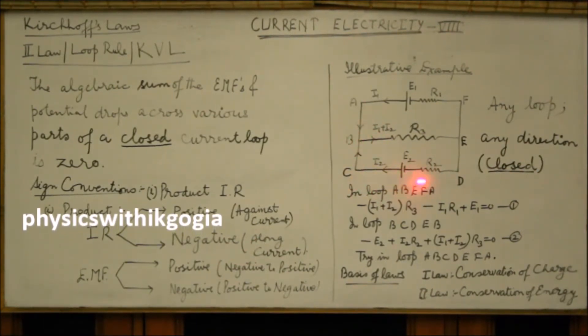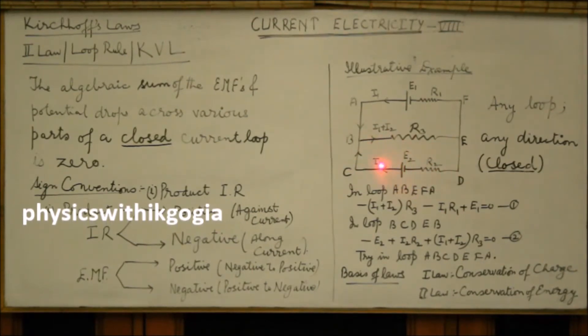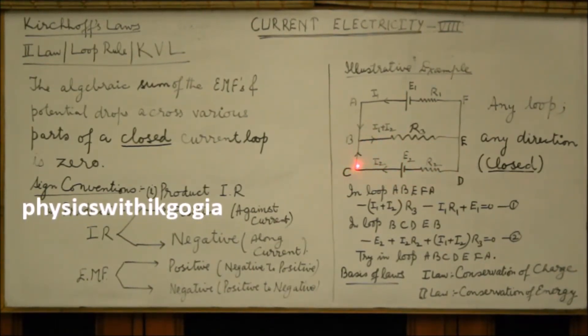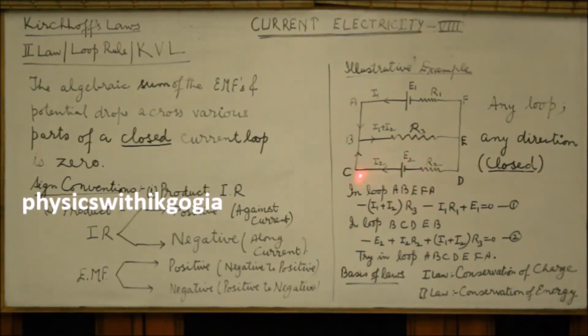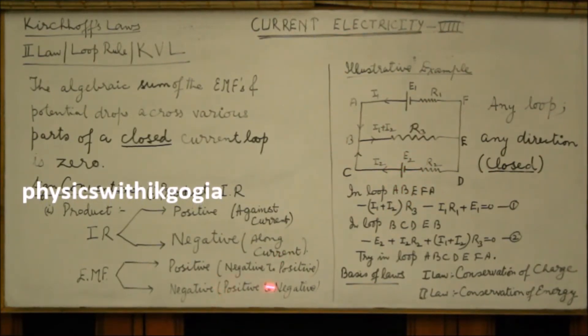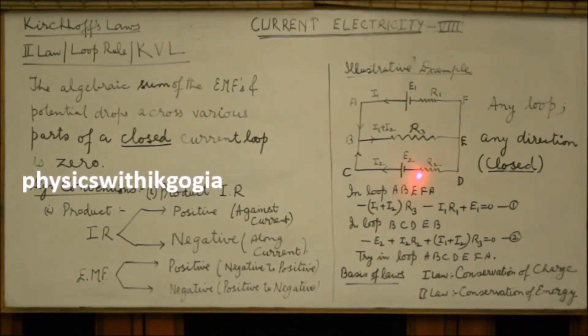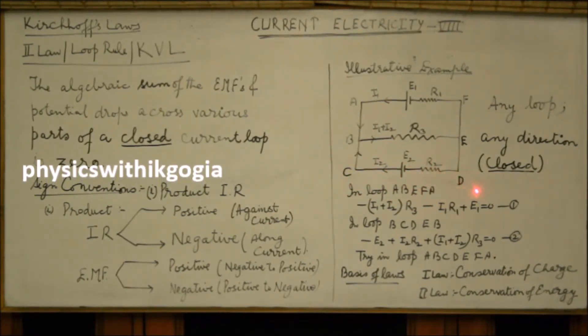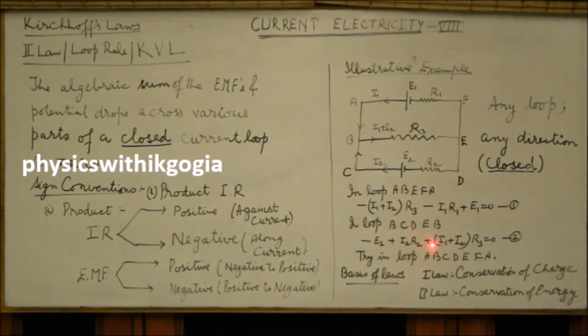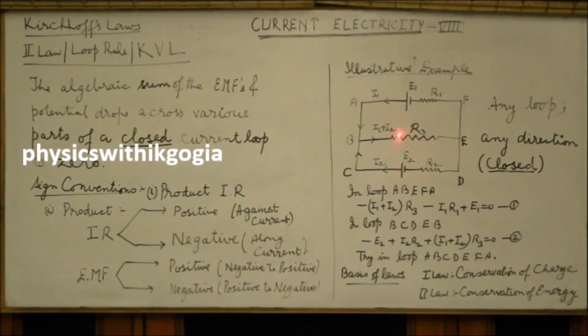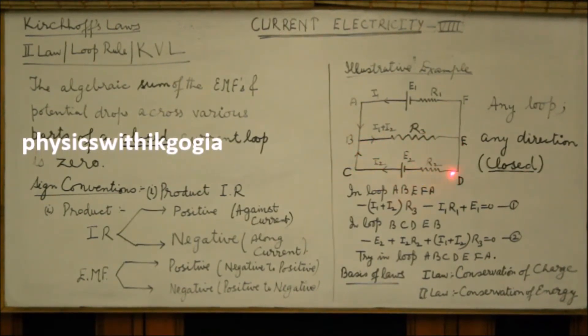Similarly, in the loop BCDEB, this closed loop. Here, we come across the cell first and we are moving from positive to negative. So the EMF will be taken as negative. Positive to negative, EMF is taken as negative. Minus E2 and through R2, we are moving opposite to the direction of current I2. So this product will be positive. Similarly, for R3, the product I1 plus I2 into R3. Again, this will be positive because we are moving against the direction of current.